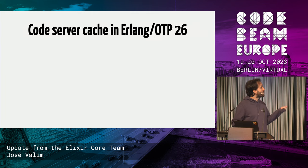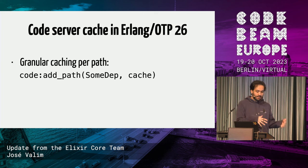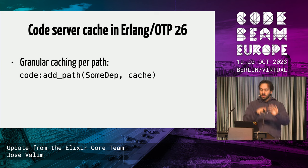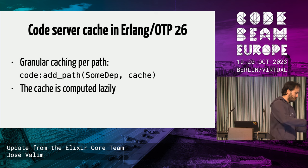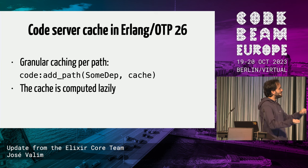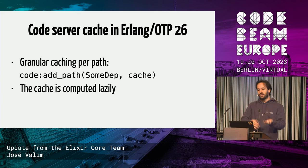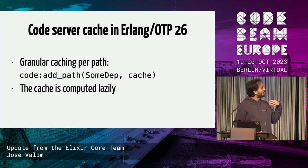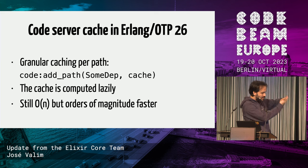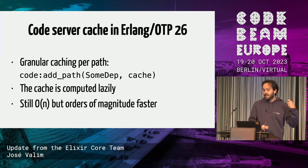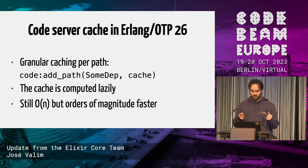In OTP 26 we contributed granular caching per path. When you add a dependency, you can mark it as cached — Elixir does this automatically. The cache is computed lazily: the first time you look up a module in a cached path, we figure out everything that is there and keep it cached. Even though you still go through all paths, it's now three orders of magnitude faster because instead of hitting the file system, all you do is check for a key in a map.